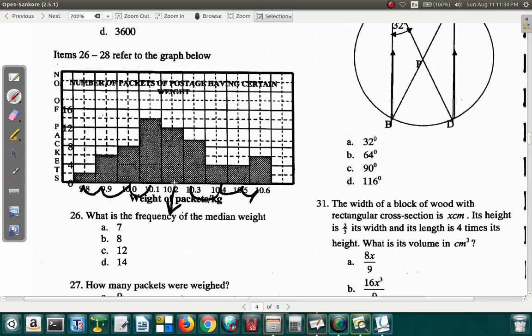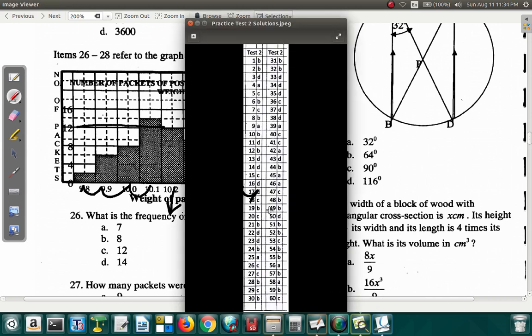This one represents the median. Now they ask for the frequency. Frequency means how many times it occurs. At the top of this chart we go across and we see 12. So question 26, this is suggesting that the answer is C, 12.